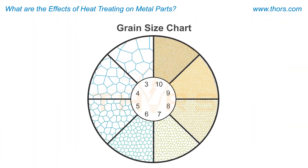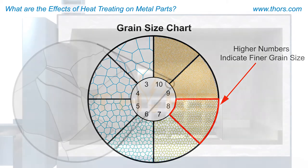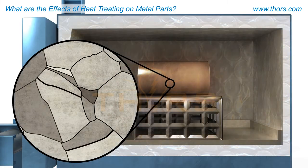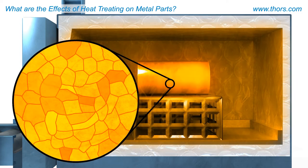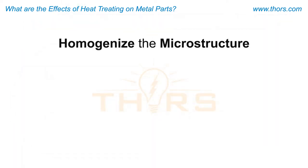Product manufacturing typically strives for a smaller, finer grain size for metal parts, as this provides greater strength levels compared to coarser grains. Grain refinement is the process of utilizing heat treatment in order to produce a smaller, more uniform, and therefore stronger grain structure.